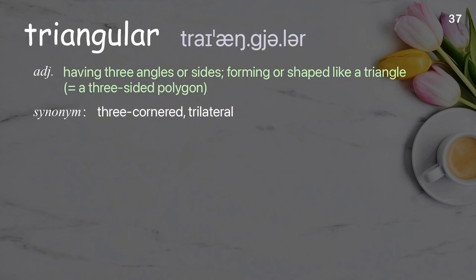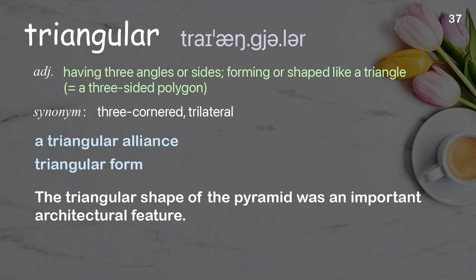Triangular: having three angles or sides; forming or shaped like a triangle; equals a three-sided polygon. Examples: A triangular alliance. Triangular form. The triangular shape of the pyramid was an important architectural feature.